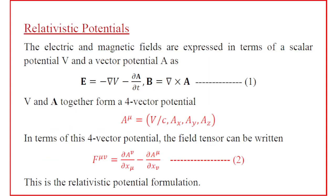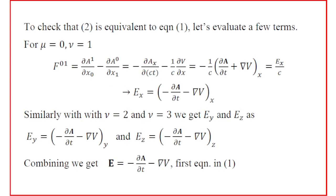F01 = ∂A1/∂x0 − ∂A0/∂x1. Here A1 = Ax and x0 in the contravariant form is ct, while x0 in the covariant form is −ct.